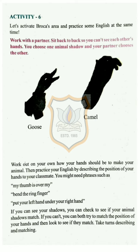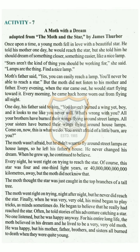Take turns describing and matching. This activity relates to Broca's area and helps you practice English at the same time. Next, move on to activity number 7: 'A Moth with a Dream,' adapted from 'The Moth and the Star' written by James Thurber.